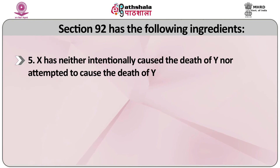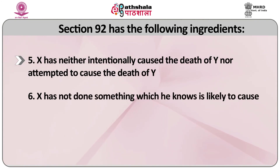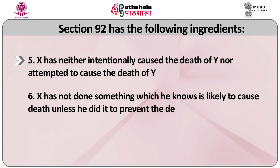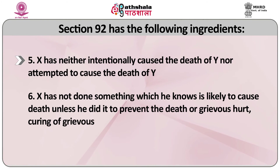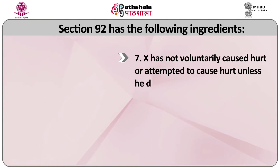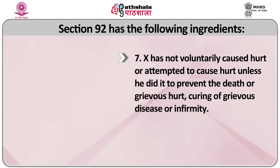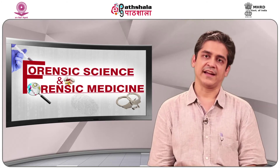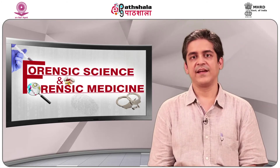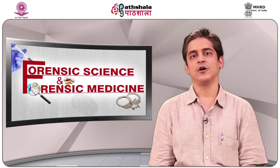X has neither intentionally caused the death of Y nor attempted to cause the death of Y. X has not done something which he knows is likely to cause death unless he did it to prevent the death or grievous hurt or the curing of any grievous disease or infirmity. Section 92 also prescribes that it will not extend to the abetment of any offense if it does not already extend to the actual commission of such an offense.